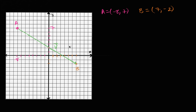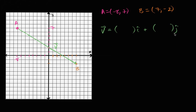So given that, what are going to be the X and Y components of our vector V? Well, let's think about it. One way to express a vector is using unit vector notation. The X component you can view as the change in X between the initial point and the terminal point. So the change in X is going to be the terminal X, seven, minus the initial X, minus negative eight.